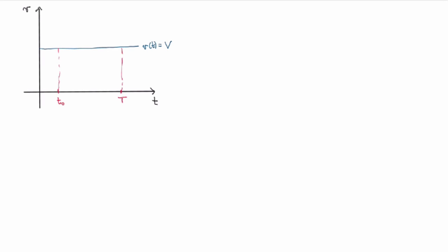How do I calculate the distance traveled? If we're going at constant velocity, then the distance traveled Δx will be equal to the constant velocity times the duration of the time interval, Δt. But this formula is only valid for constant velocity.